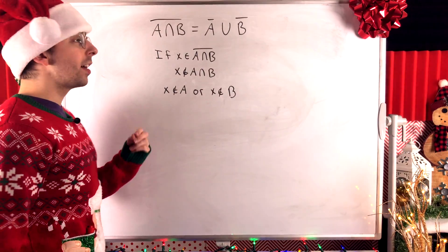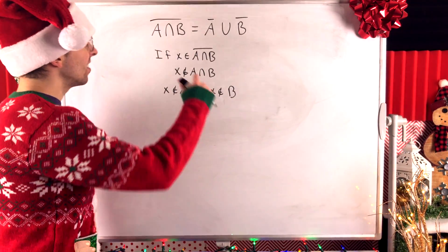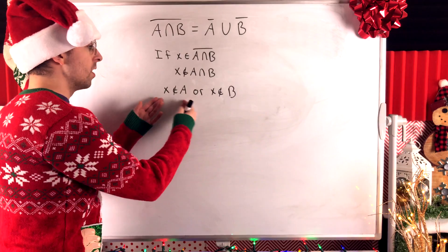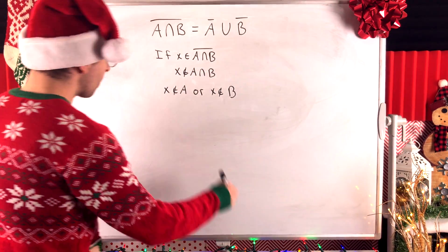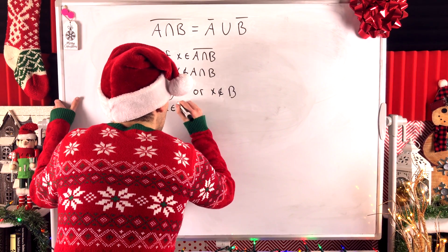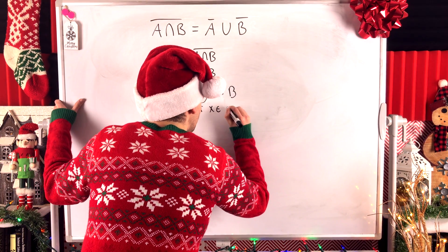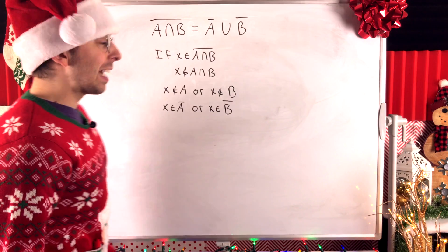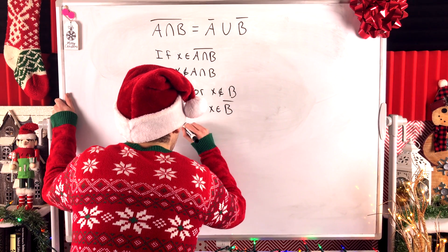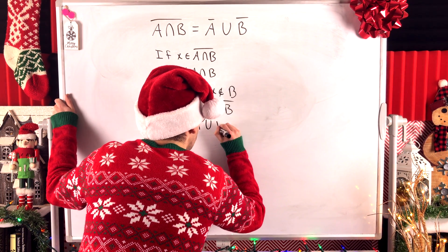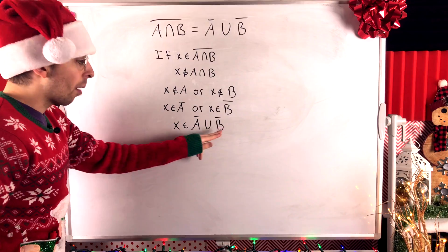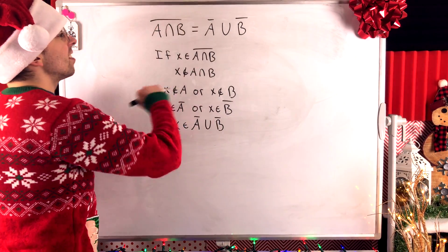To be in A intersect B, x would need to be in A and in B. Since x isn't in A intersect B, that means it's not in A or it's not in B — it could not belong to either of those sets. So if x isn't in A or x isn't in B, then by definition of set complement, x is an element of A complement or x is an element of B complement. By definition of set union, x being in A complement or B complement means x is an element of A complement union B complement. So any element from the complement of A intersect B is also in A complement union B complement.